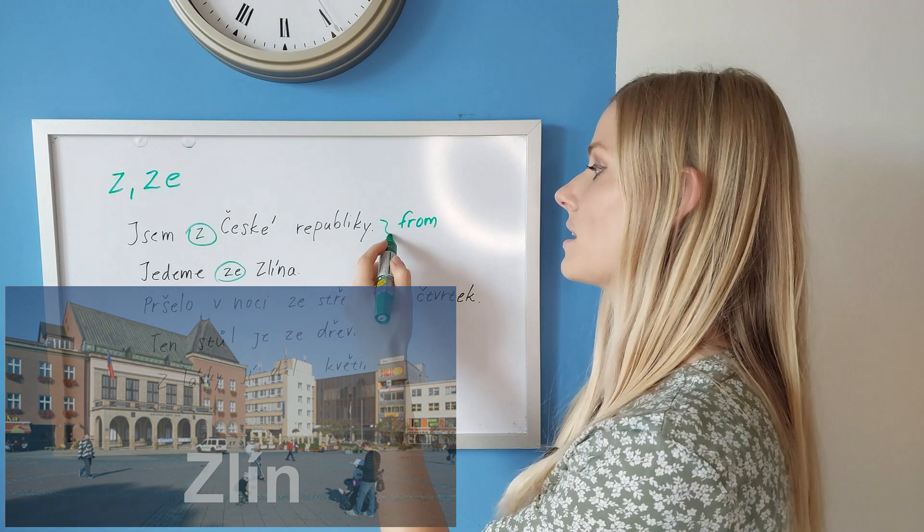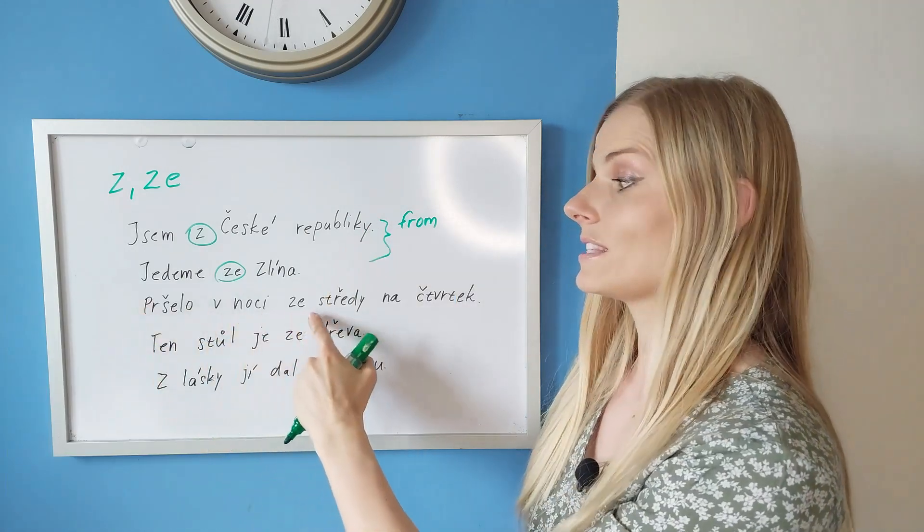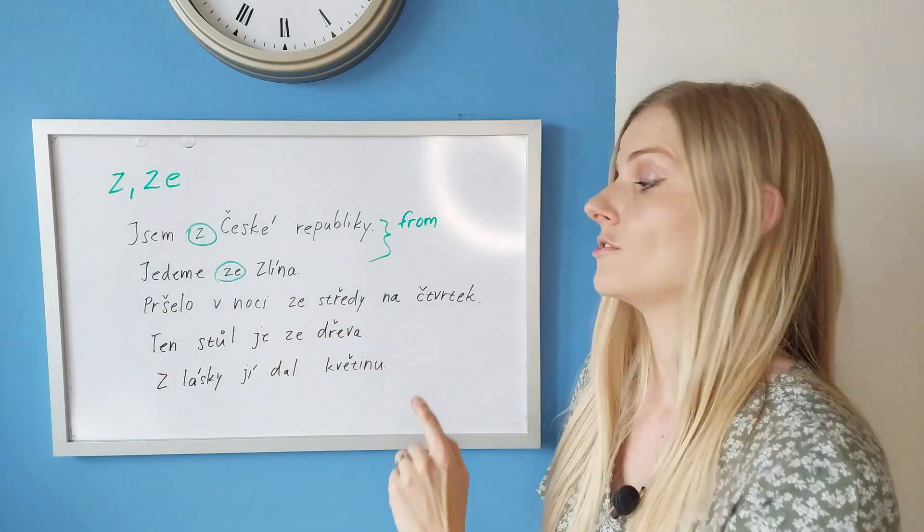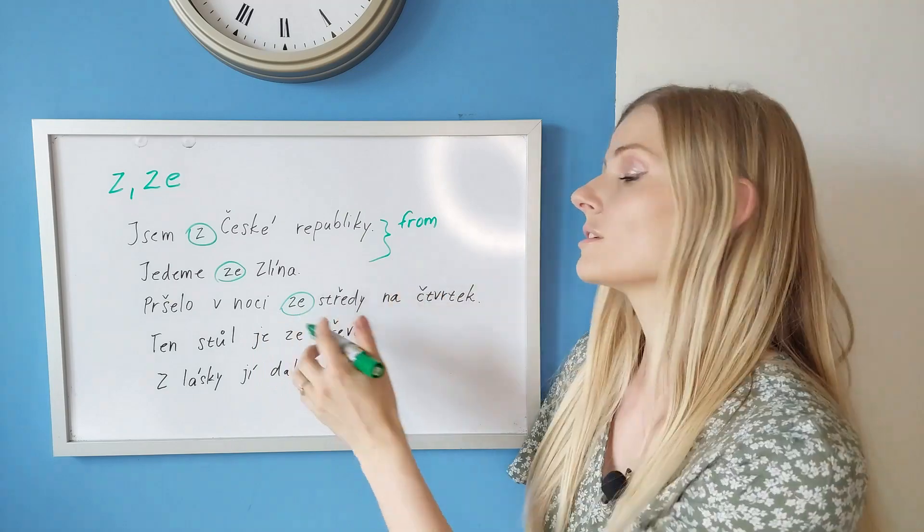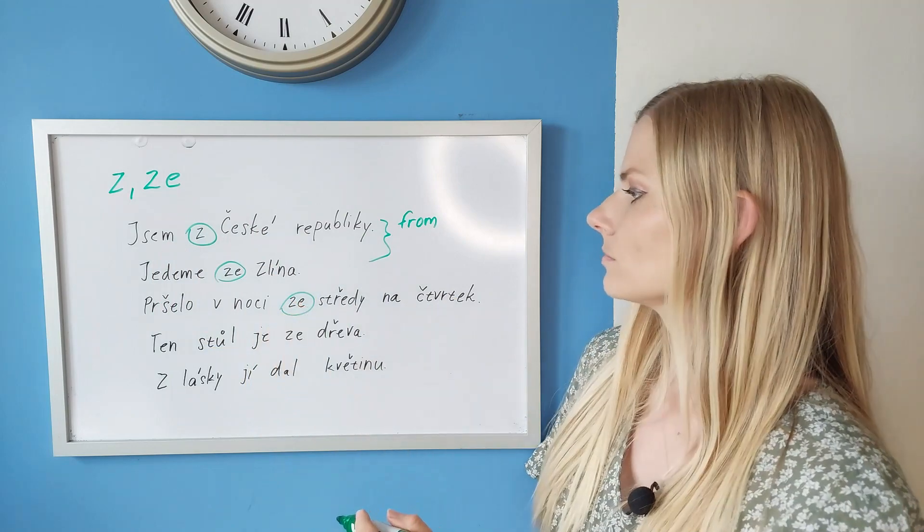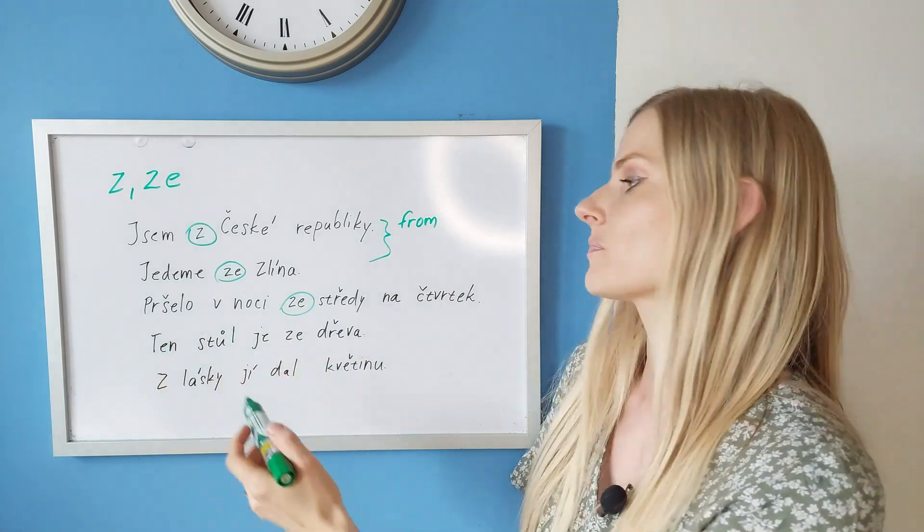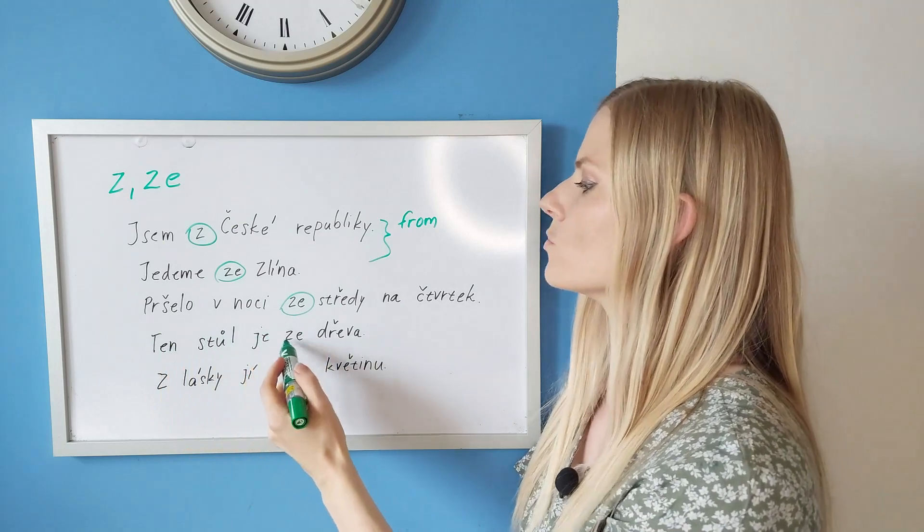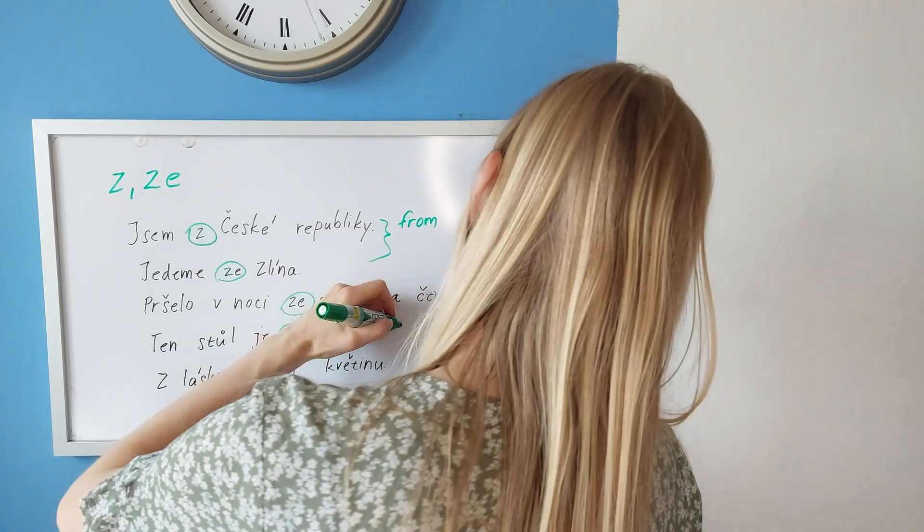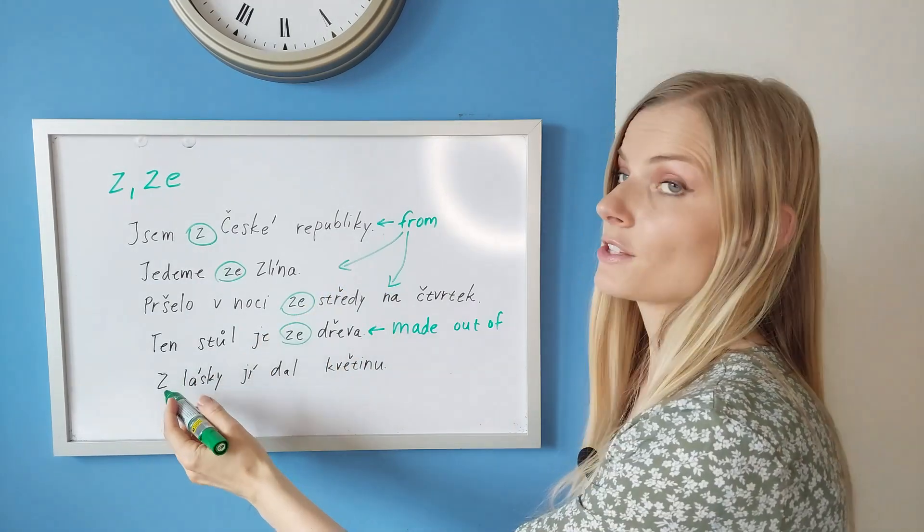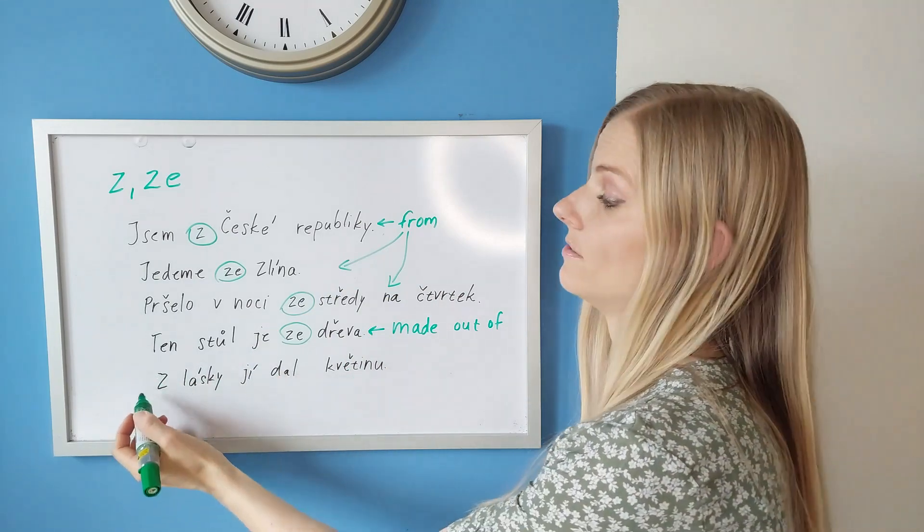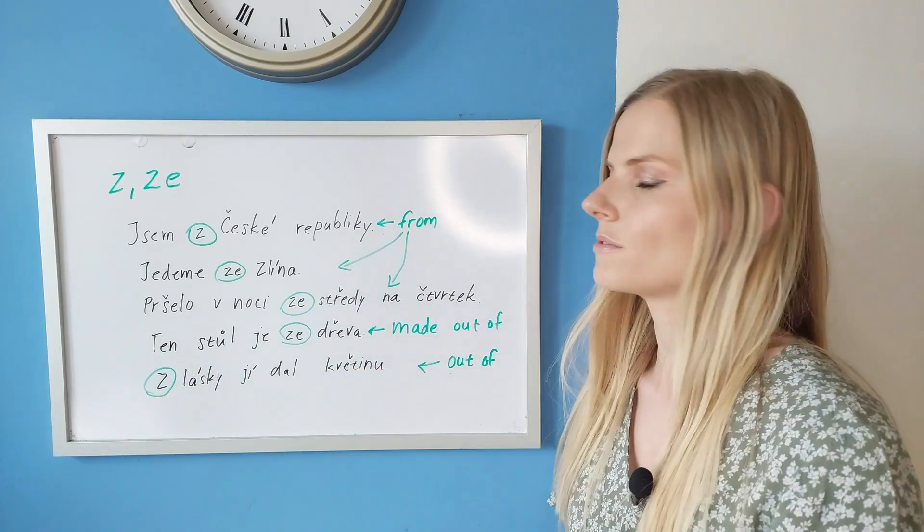Pršelo v noci ze středy na čtvrtek - It rained on the night from Wednesday to Thursday. So here it's also from, but it refers to time. Ten stůl je ze dřeva - That table is made out of wood. Z lásky jí dal květinu - He gave her a flower out of love.